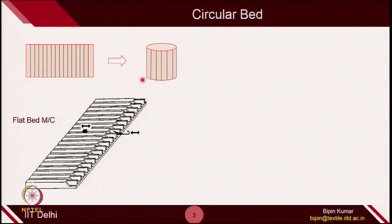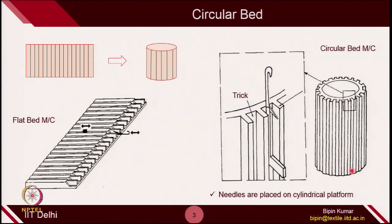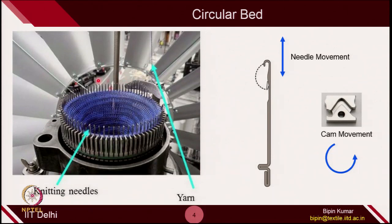The rectangular platform changes to a cylindrical platform. Here is the machine and how it looks schematically. It is a cylindrical platform, and on this cylindrical platform slots are created. Each of these slots, which is called a trick, has one particular needle placed in it. These slots are separated by two walls, which also play a very important role. The only difference from flat bed is that here in circular bed, the needles are placed on a cylindrical platform rather than a flat surface. That is why it is called circular knitting.